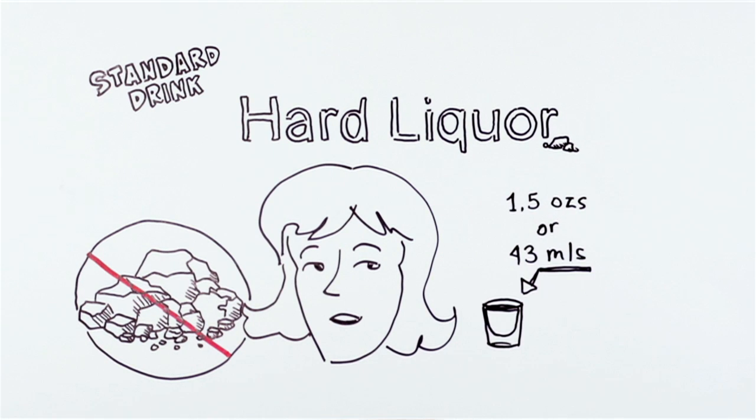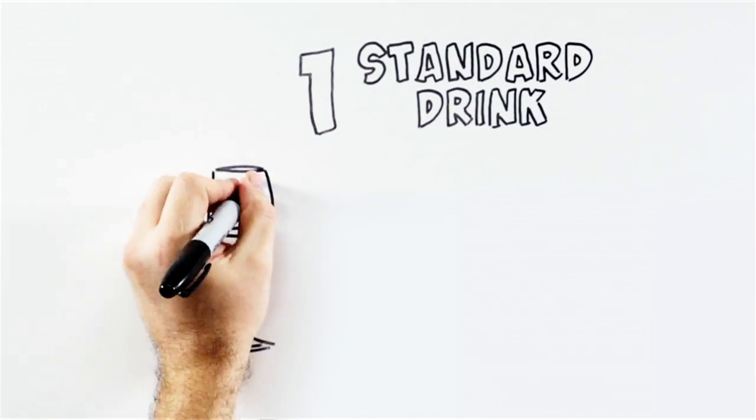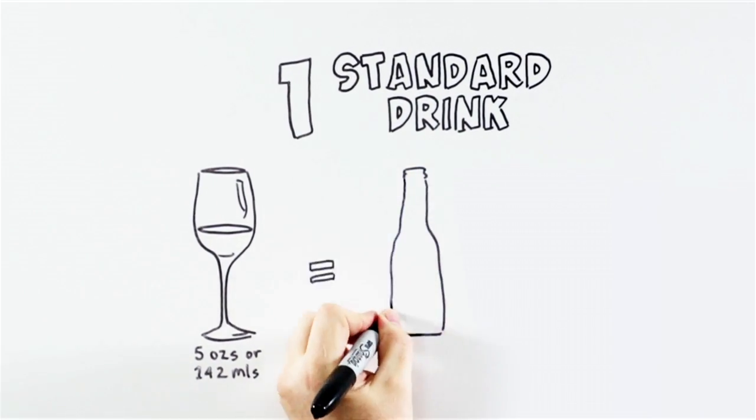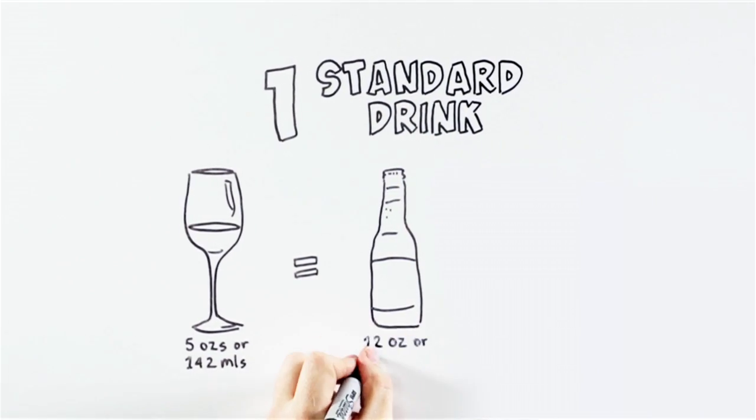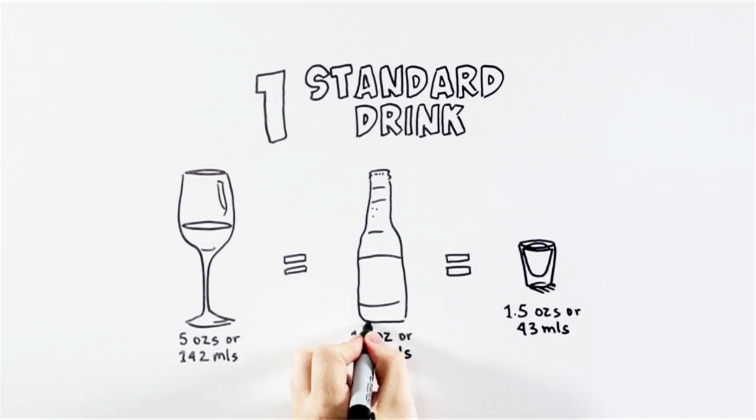Let's recap what one standard drink is. Five ounces or 142 milliliters of wine equals 12 ounces or 341 milliliters of beer, which also equals one and a half ounces or 43 milliliters of hard liquor. Each of these equals one standard drink.